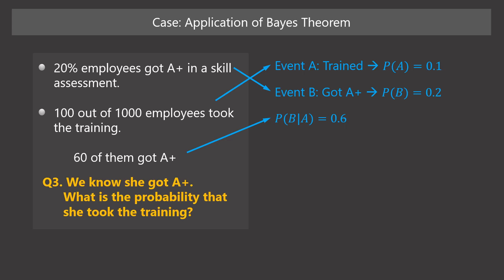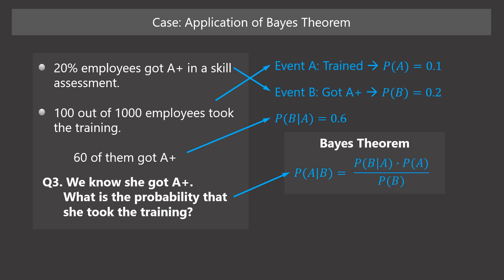The question we want to answer is: if she got A+, what is the probability that she took the training? So what we want to find is the conditional probability of A given B. Let's use Bayes' theorem to find this conditional probability. Plug in the values into each component of the Bayes' theorem equation. Then we can get the answer. The probability is 0.3.